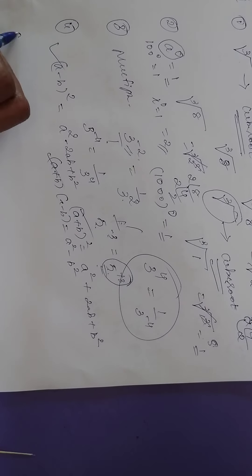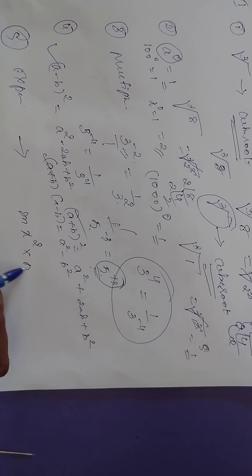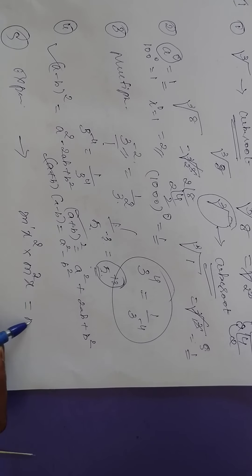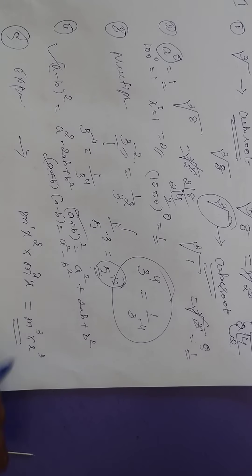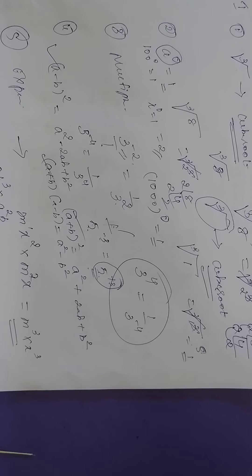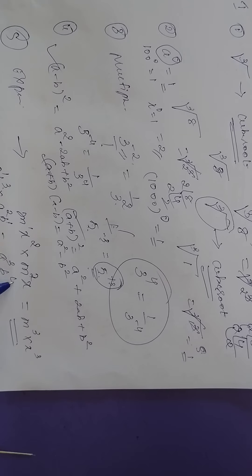Next, exponential form — writing in exponential form. For example, M times X to the power of 2 into M times X to the power of 2 times X: since X has no written exponent, its power is 1. So we can write N to the power of 3 into X to the power of 3. Same way, A into B to the power of 3 into A to the power of 2 into B — the powers add: 2 plus 1 is 3, and 3 plus 1 is 4.